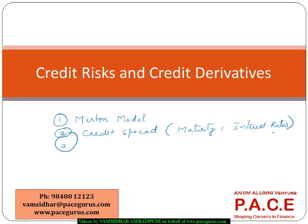That is one more dimension we will look at: how to determine the value of the firm — firm value and volatility — and what are the various mechanisms to determine the value of the firm as well as the volatility.